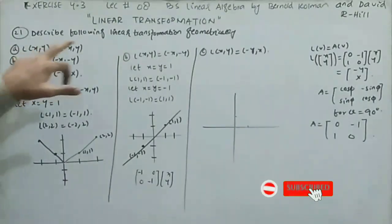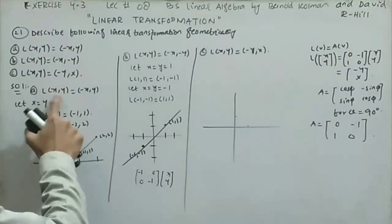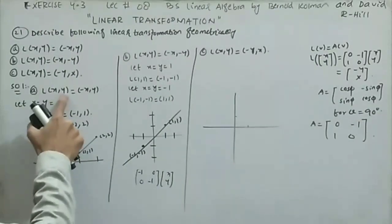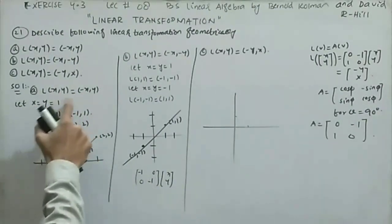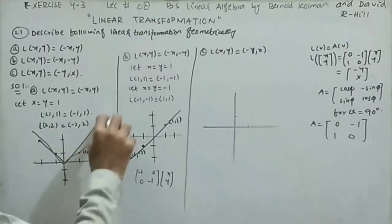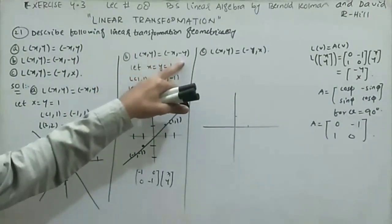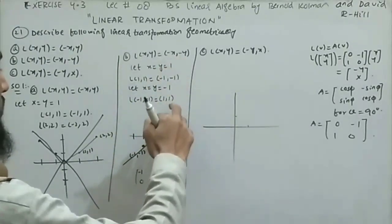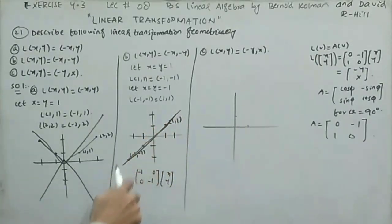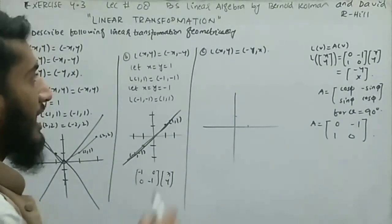Question 21 asks us to describe linear transformations geometrically. Part (a): L(x,y) = (-x, y). Testing points like (1,1)→(-1,1) and (2,2)→(-2,2), and drawing the graph, we conclude this transformation is a reflection along the y-axis. Part (b): L(x,y) = (-x,-y). Testing (1,1)→(-1,-1), and drawing the graph shows the line passes through the origin — this is a reflection through the origin, passing through both axes.